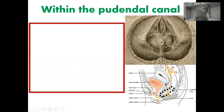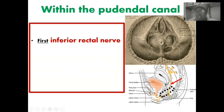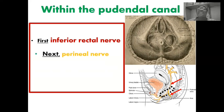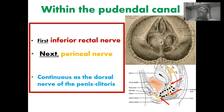Within the pudendal canal, the pudendal nerve gives off one of its branches: the inferior rectal nerve. The pudendal nerve, highlighted in red, passes through the pudendal canal and within it gives off the inferior rectal nerve. It then continues and gives off an additional branch — the perineal nerve. After exiting the pudendal canal, it finally terminates as the dorsal nerve of the penis in males, or the dorsal nerve of the clitoris in females.